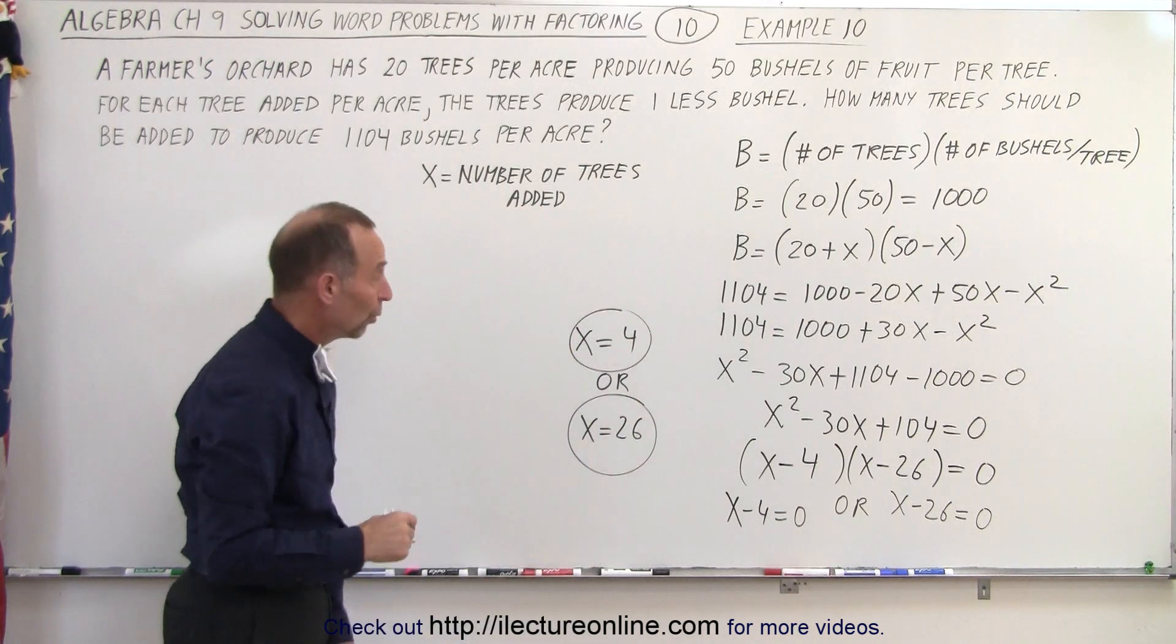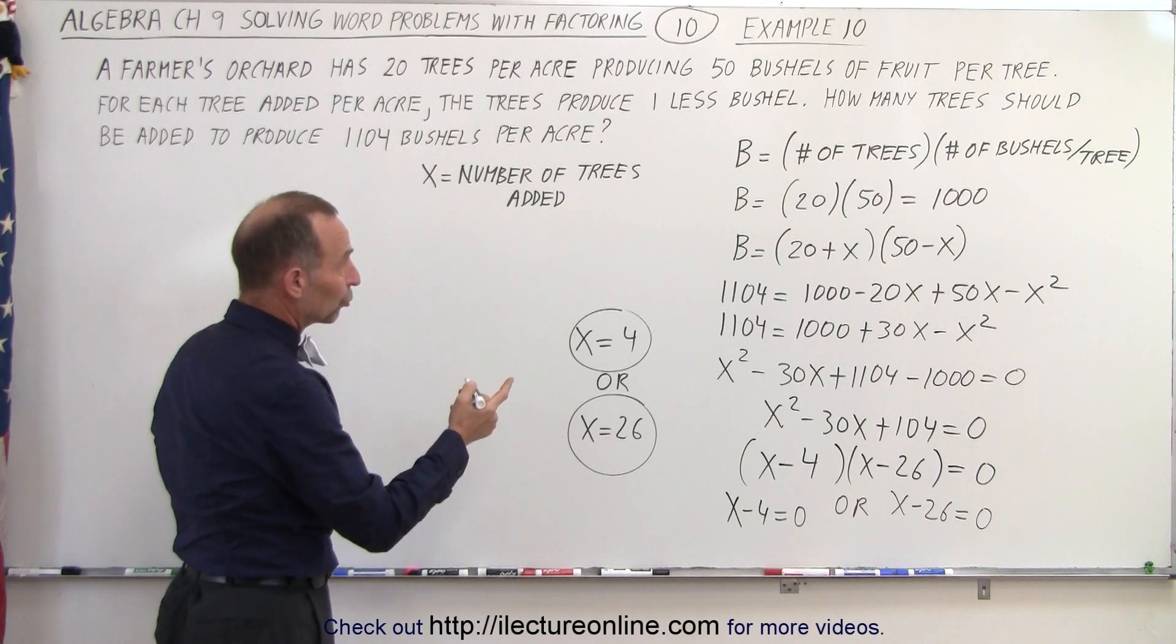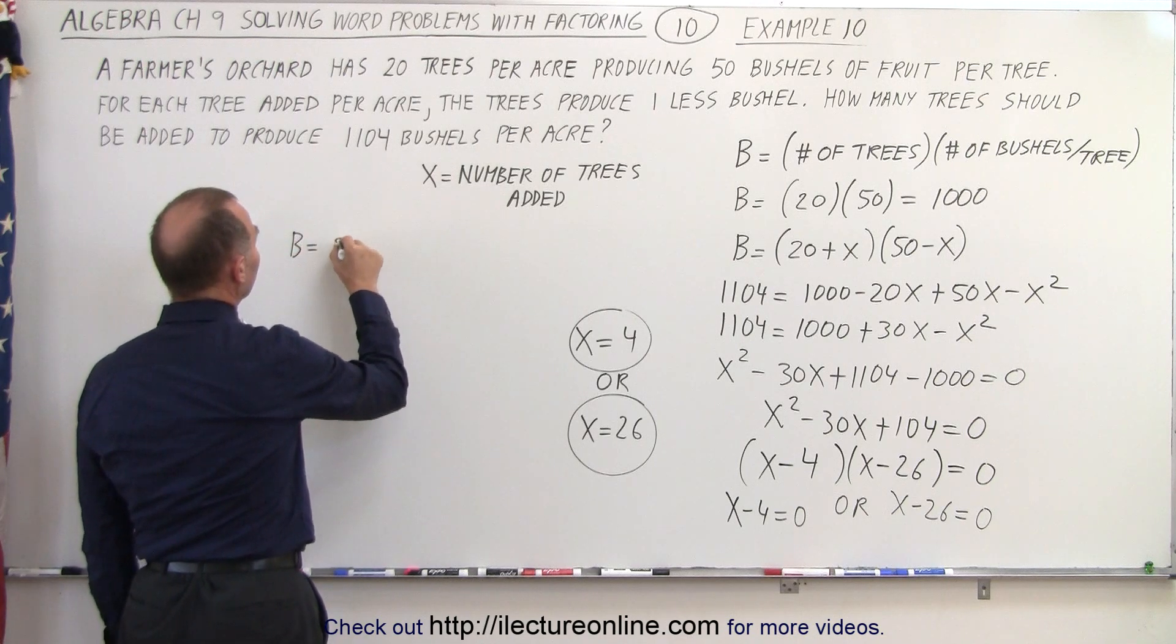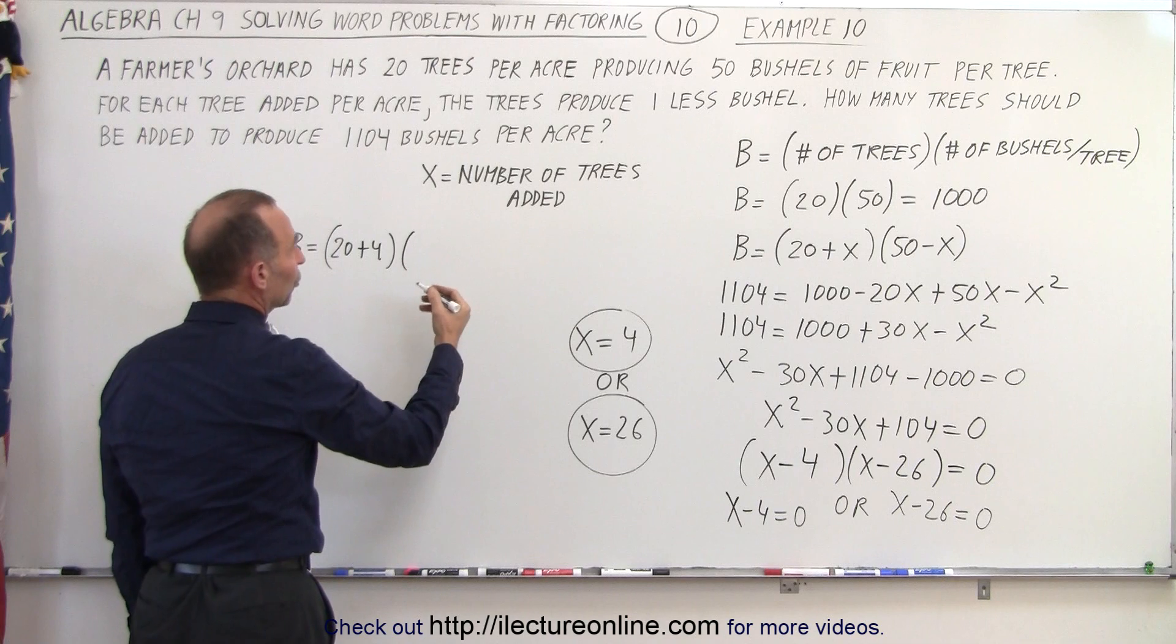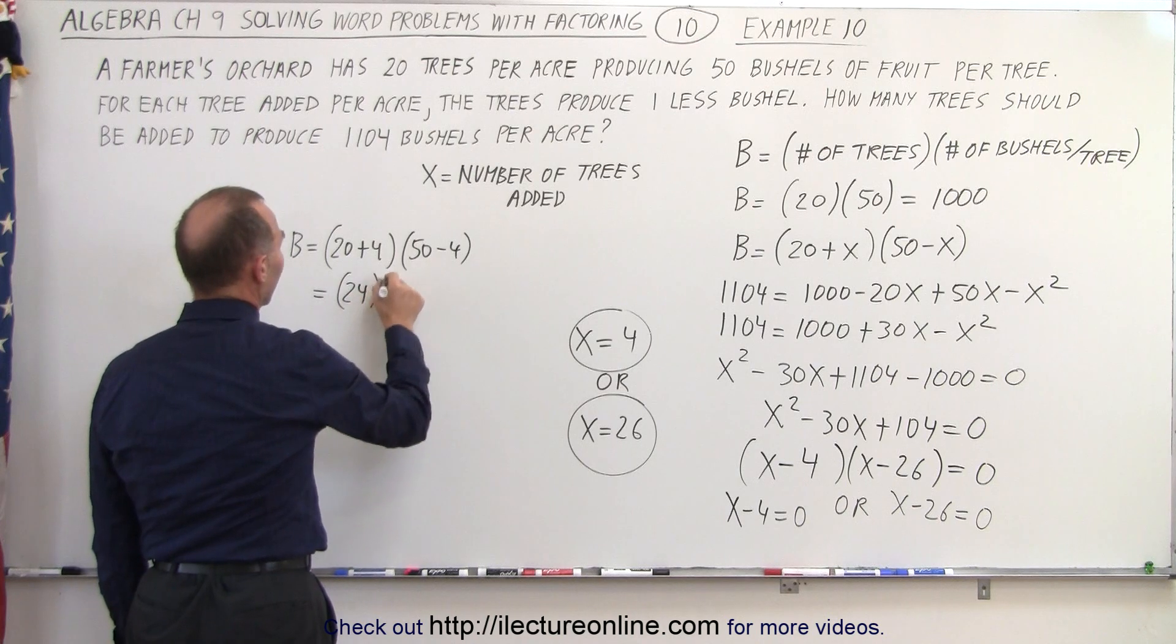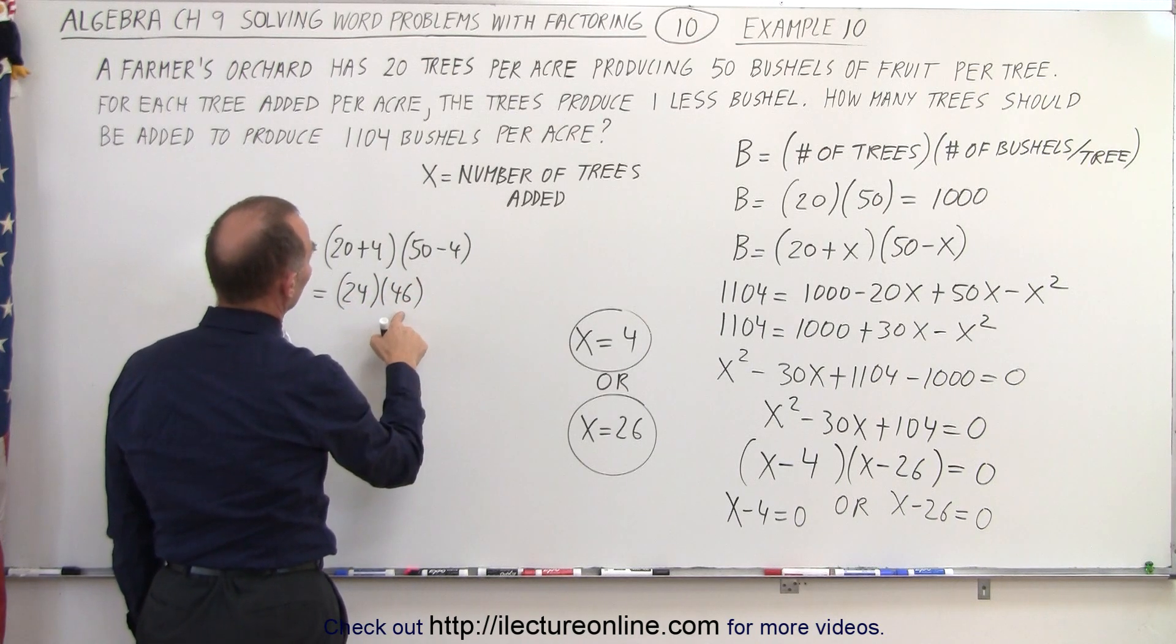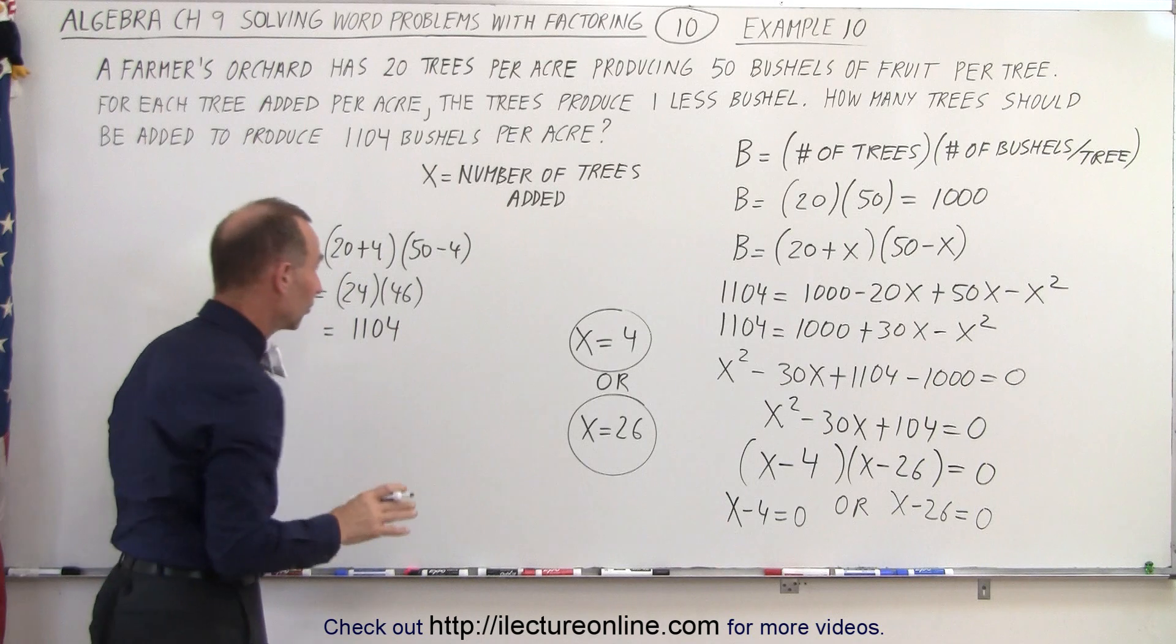Now let's see which of these will give us the correct solution. If we have four more trees, then the number of bushels produced is going to be 20 plus 4. And each tree will then produce four less bushels, which is 50 minus 4. And so that will be 24 times 46. And let's see, that's 1,104 bushels. So that will work. That will give us the correct answer.